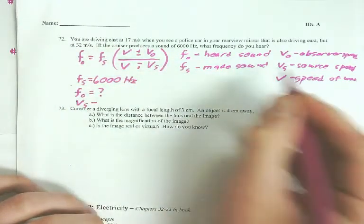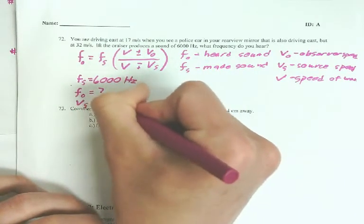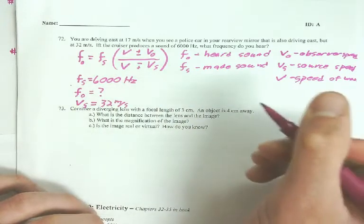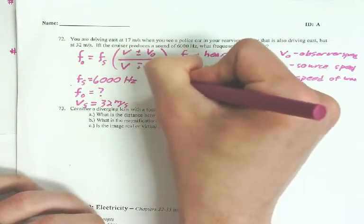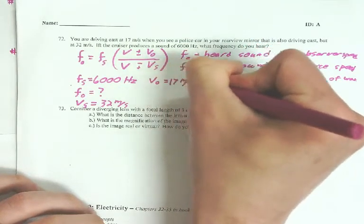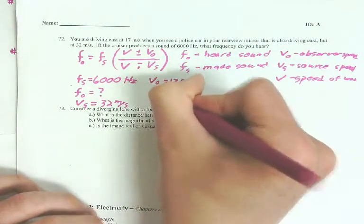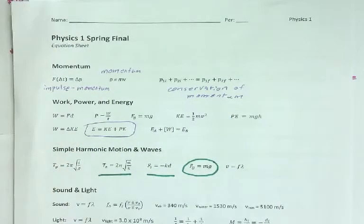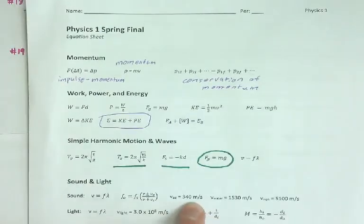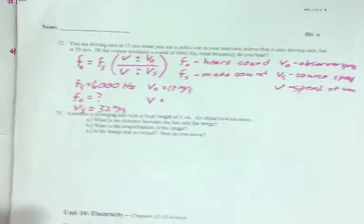V-S is how fast the source is going. That's the police car. He's going 32. V-O is your speed, the observer's speed. You're going 17. And then V is the speed of the wave. And this is sound. Specifically, sound traveling through the air. And that's going to give me this down here. 340.